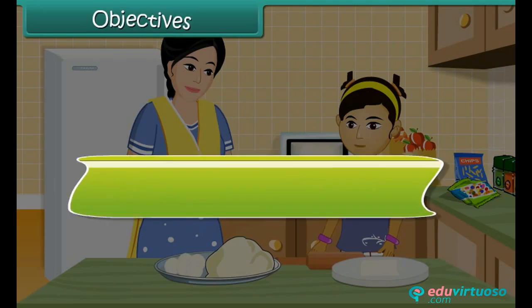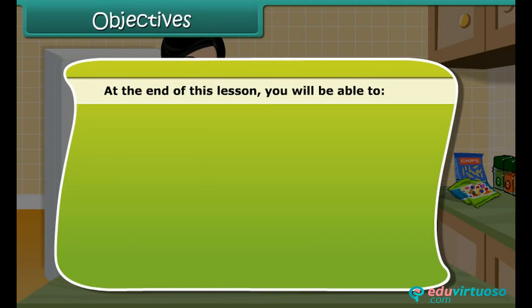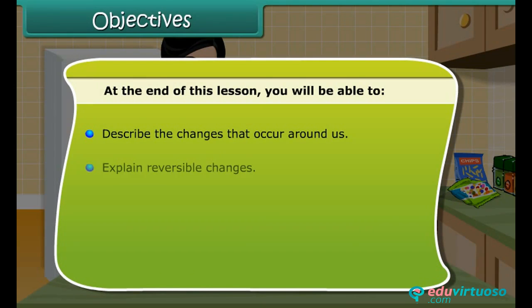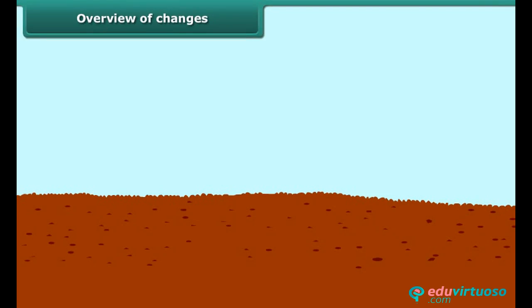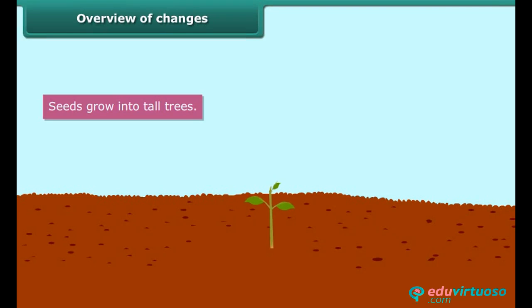Objectives. At the end of this lesson you will be able to: describe the changes that occur around us, explain reversible changes, explain irreversible changes, describe expansion, and describe evaporation.